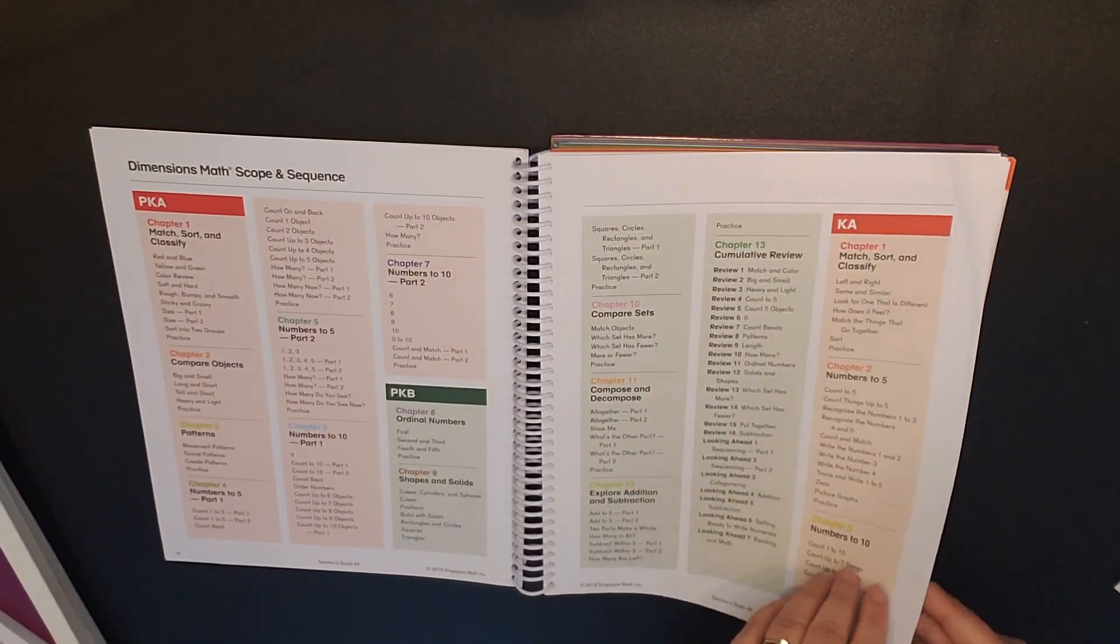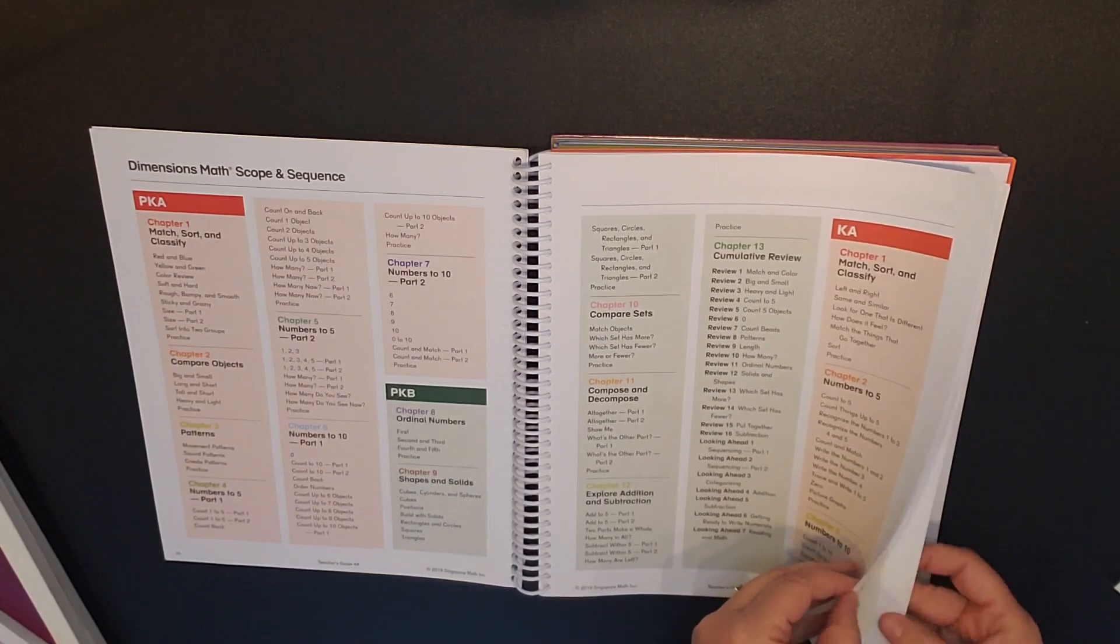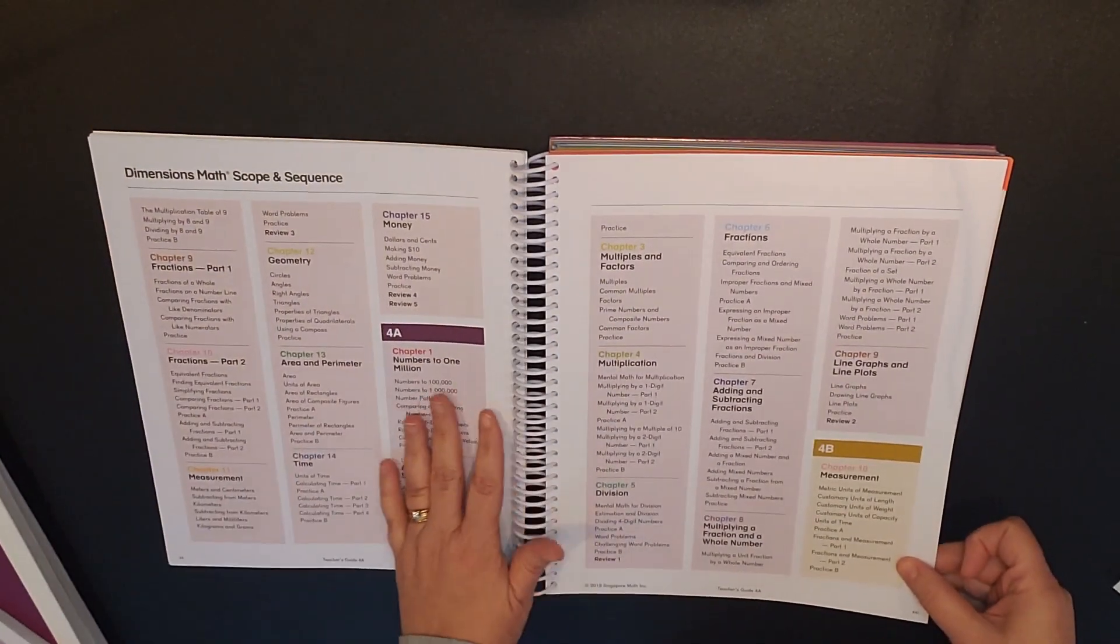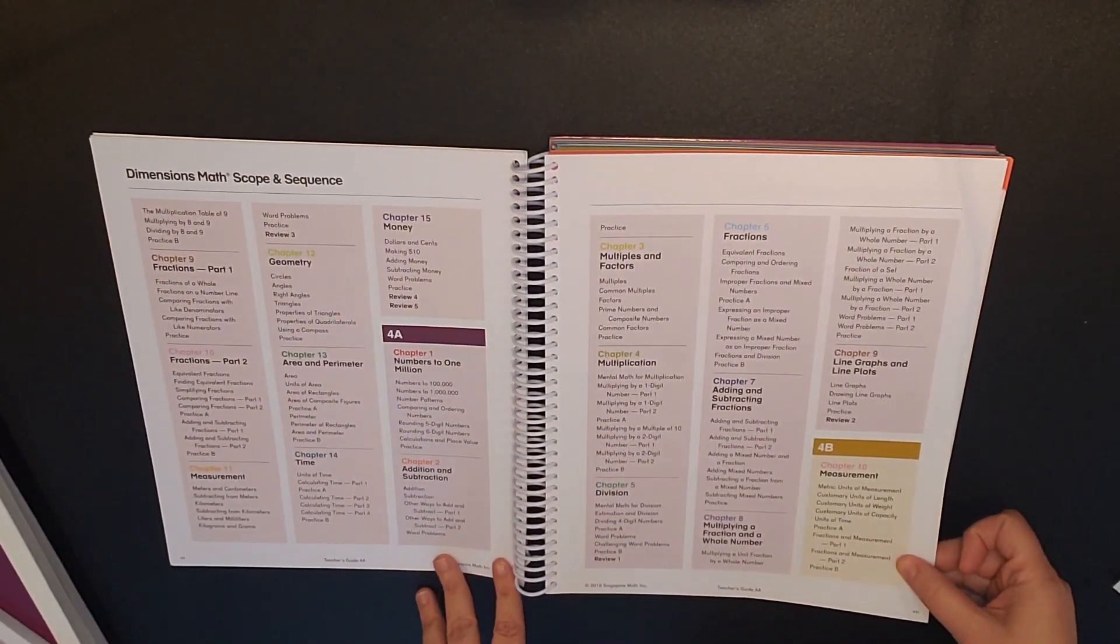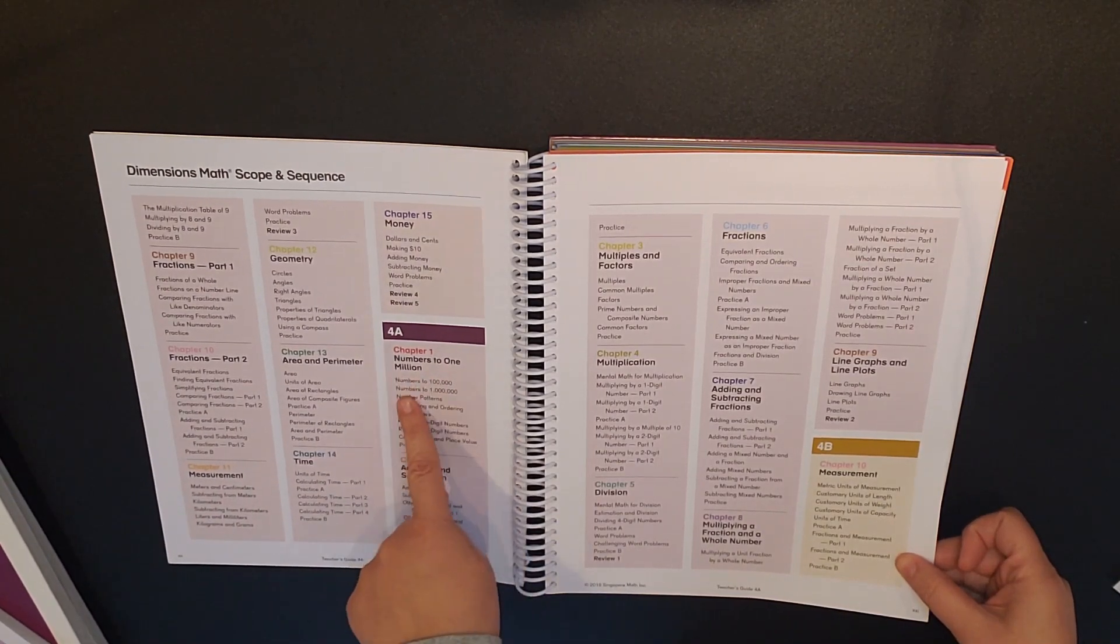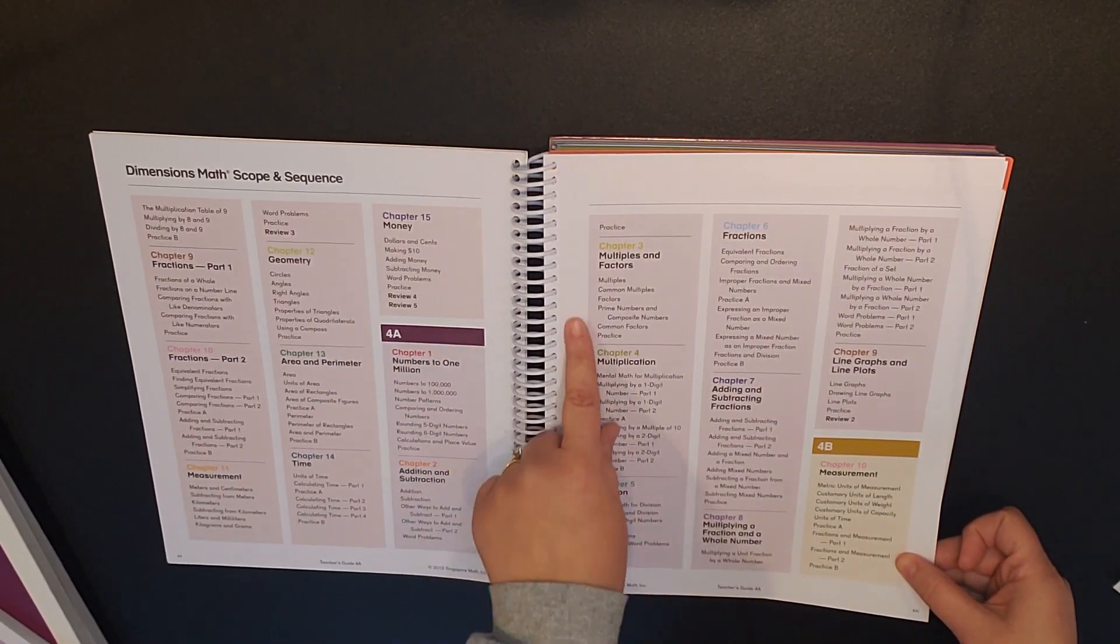At the beginning of the teacher's guide there is the scope and sequence so we'll just look at fourth grade. So for fourth grade 4A we're going to do numbers to 1 million, addition and subtraction.